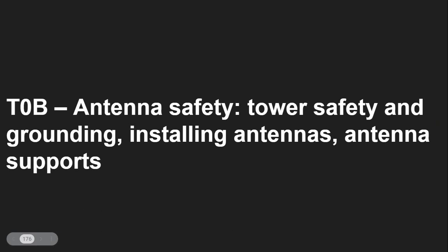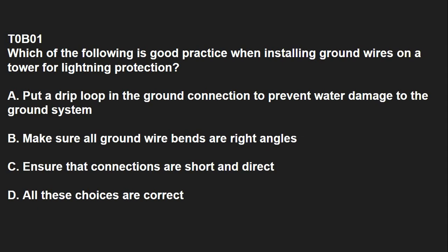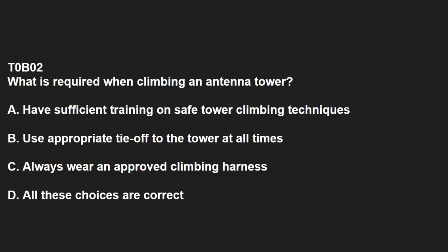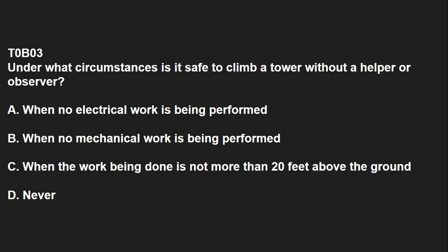T0B covers antenna safety, tower safety and grounding, installing antennas, and antenna supports. T0B01: Which of the following is a good practice when installing ground wires on a tower for lightning protection? Ensure that the connections are short and direct. T0B02: What is required when climbing an antenna tower? You should have sufficient training on safe tower climbing techniques, use appropriate tie-off to the tower at all times, always wear an approved climbing harness — all of those are correct. T0B03: Under what circumstances is it safe to climb a tower without a helper or observer? Never — never climb alone.